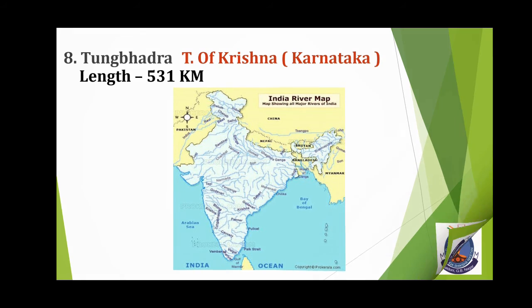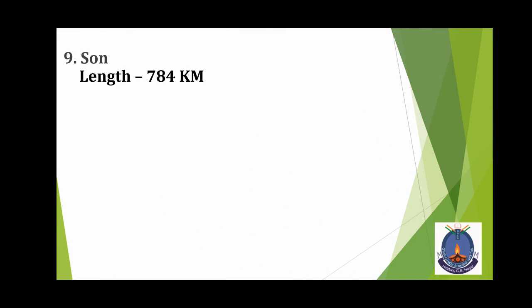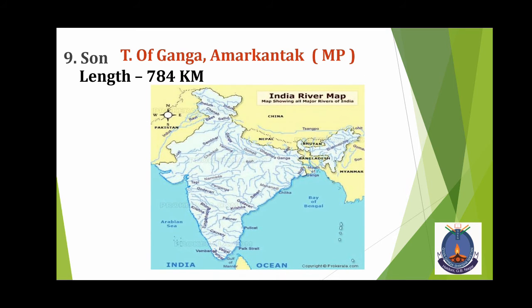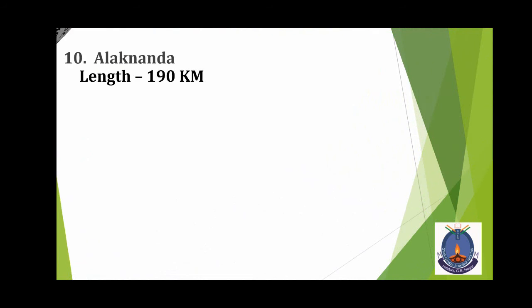Son. इसका origin कहां से होता है? यह Tributary River है Ganga की। यह Amarkantak से निकलती है। Length कितनी है? 784 km. आप देखिए यहां पर Son River लिखा है।